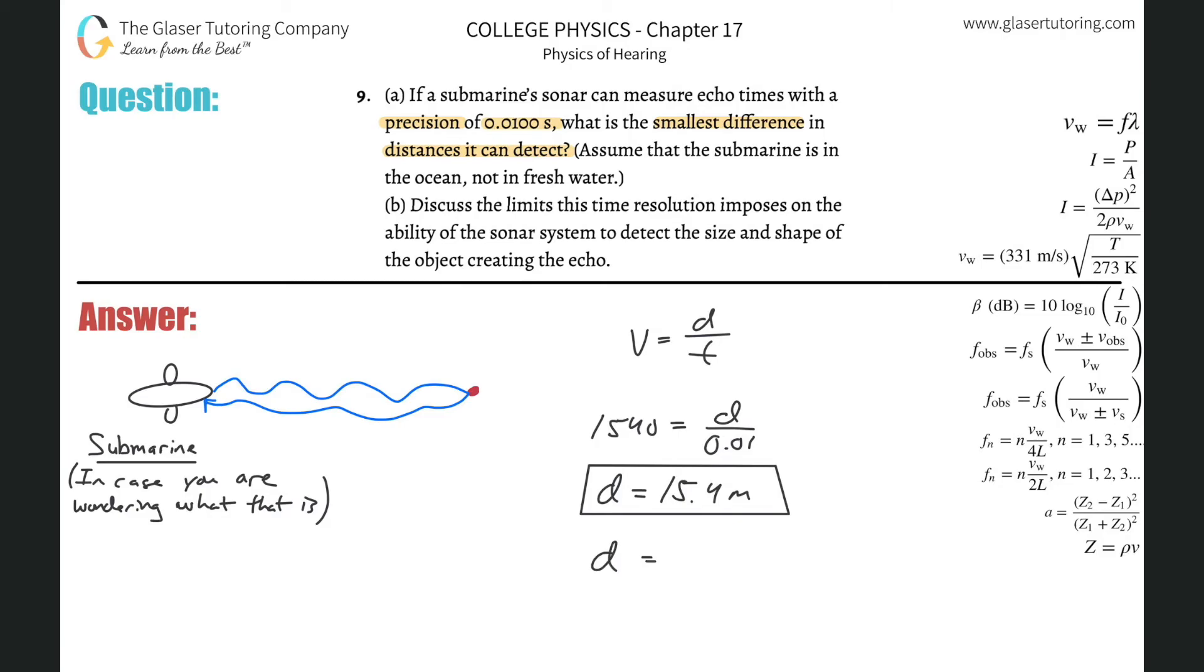So if we divide that by 2 now, we realize that the distance comes out to be about 7.7. Let's see, 15.4 over 2, yeah, so about 7.7. So 7.70 with 3 sig figs. This would now be the smallest difference that the submarine can detect. So that is in terms of meters, it's also basically the uncertainty in the measurement.